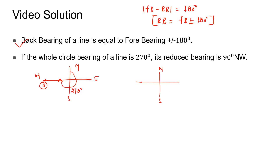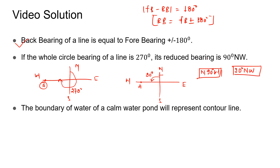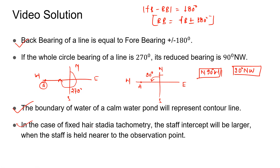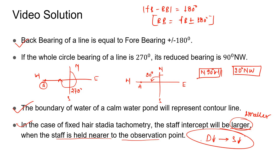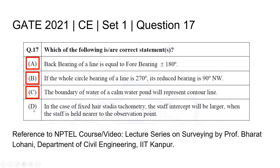Statement C — boundary of calm water pond represents a contour line — is correct, as discussed. Statement D — in fixed hair stadia tacheometry, the staff intercept will be larger when the staff is held nearer to the observation point — is wrong. It should be smaller, because if the distance D decreases, the staff intercept also decreases. Therefore, options A, B, and C are correct, and option D is incorrect.